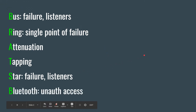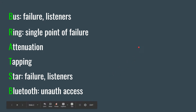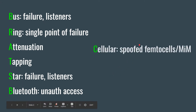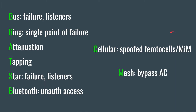For Bluetooth, we have unauthorized and unauthenticated access. We also have cellular — the spoofed femtocells — basically leading to a man-in-the-middle attack. For the mesh topology, we have bypassing access controls.